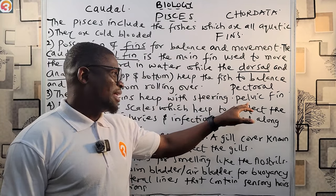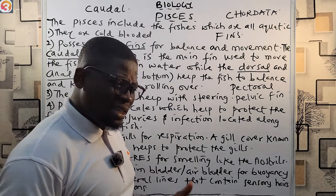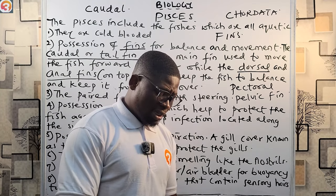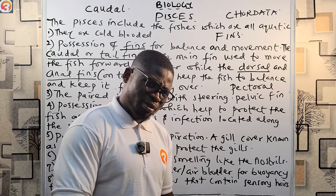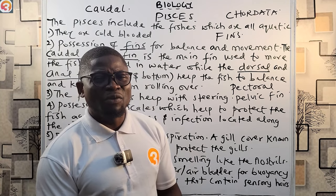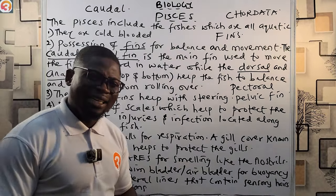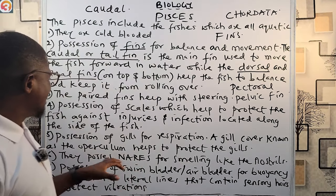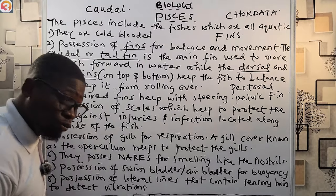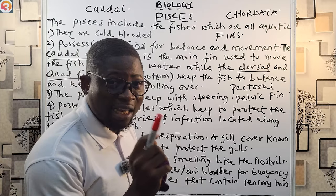Number four: possession of scales. When you buy a fish and your mother wants to clean it, you use a knife to scratch out the scales — they are very hard. Scales protect the fish from injuries and also from infection along the side of the fish.